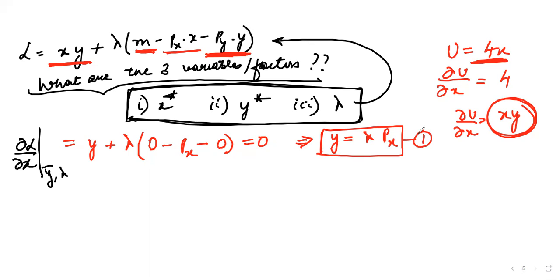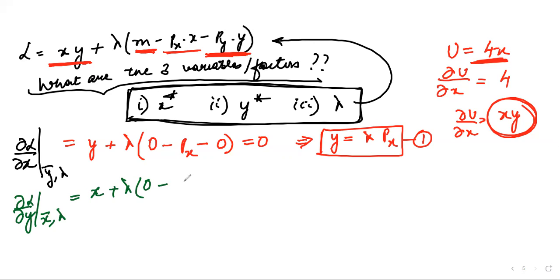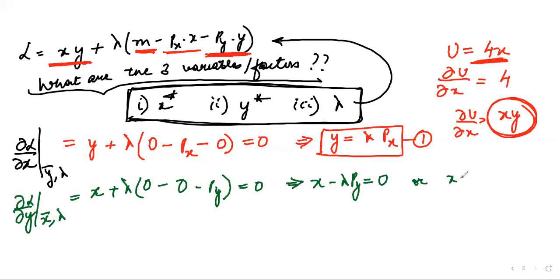Now I differentiate the Lagrange function with respect to y, holding x and lambda constant. Differentiation of xy gives x. Differentiation of m is 0, differentiation of px·x is 0, and differentiation of py·y gives py. Setting this equal to zero: x minus lambda·py = 0, which gives x = lambda·py. This is Equation 2.